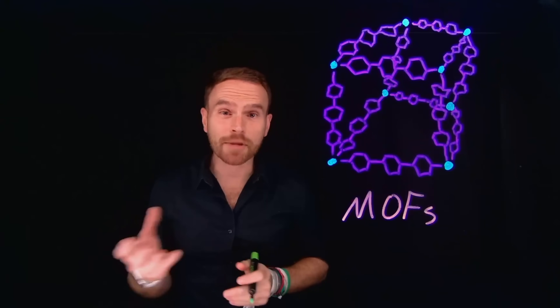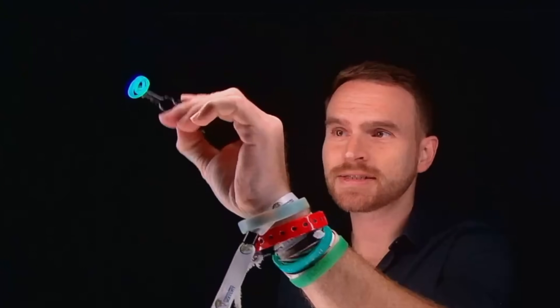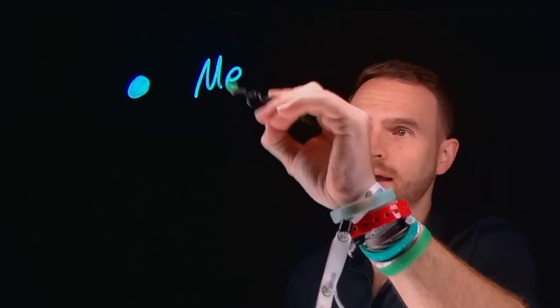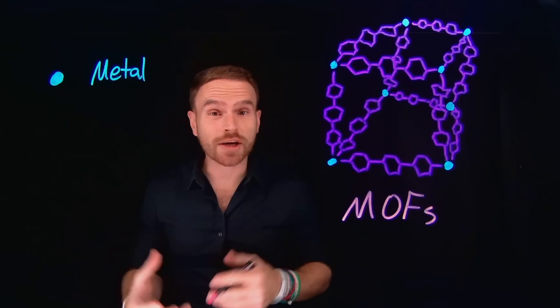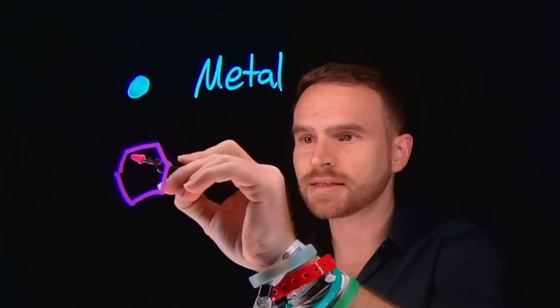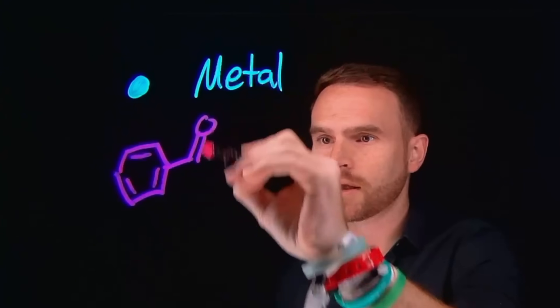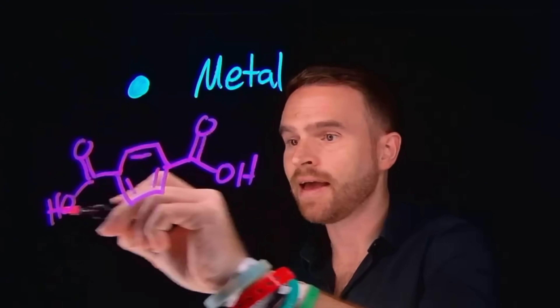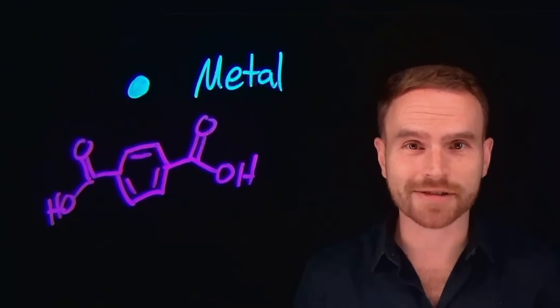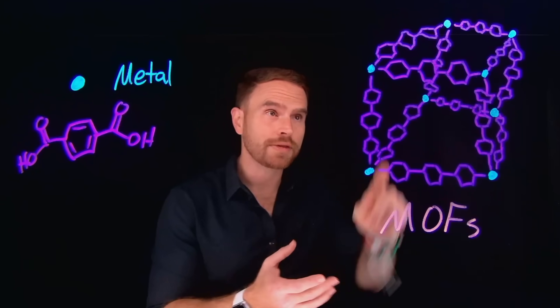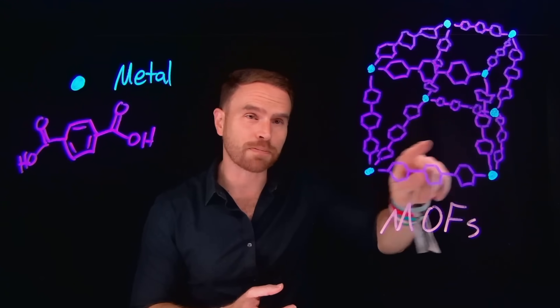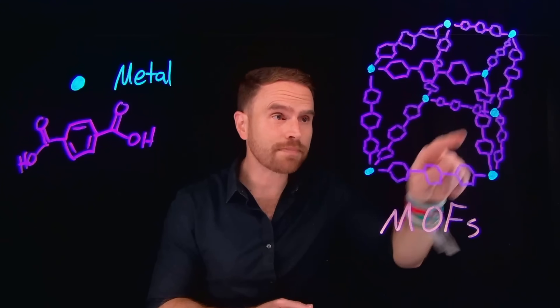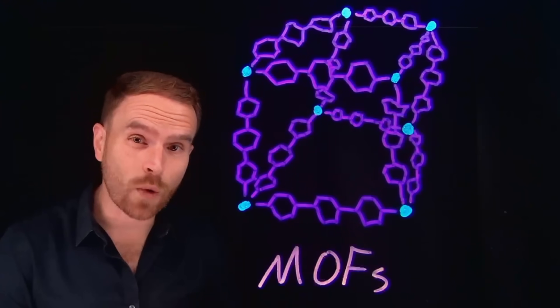A metal organic framework is like molecular architecture. Just like in architecture, we can have joints and linkers. We can think of metals or clusters of metals as being the joints. These green dots are meant to indicate different types of metals, like magnesium or zirconium. We can connect these using organic linkers, and very often these end up being carboxylates or dicarboxylates. When you put them together, you end up generating a three-dimensional network that's rigid, crystalline, and has these large pores. These pores give MOFs an incredibly large internal surface area — up to 7,000 square meters per gram.